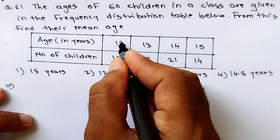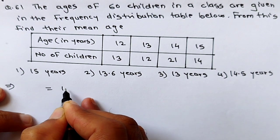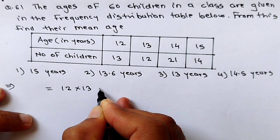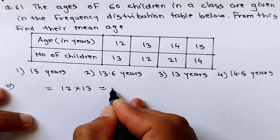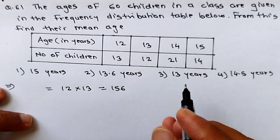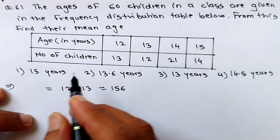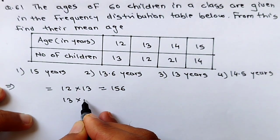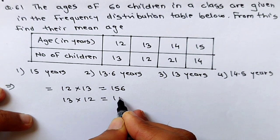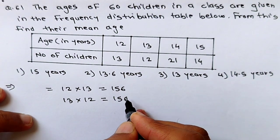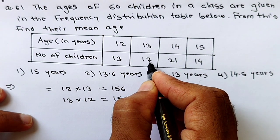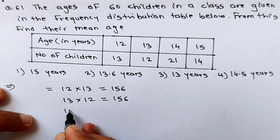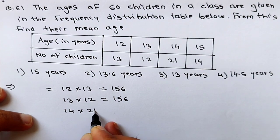The total age of the first group: age is 12 and there are 13 children, so 12 into 13 equals 156. Similarly, in the second group, age is 13 and number of children are 12, so again the multiplication is 156. That is the total age of all 12 children in that group. Similarly, if age is 14, there are 21 children.